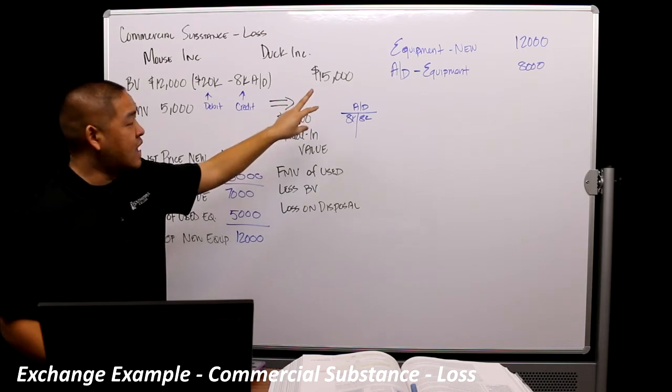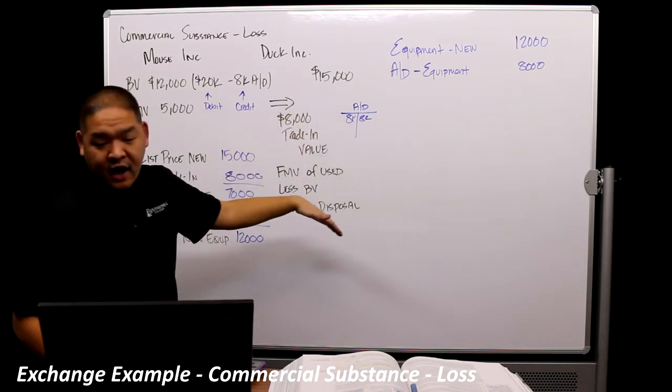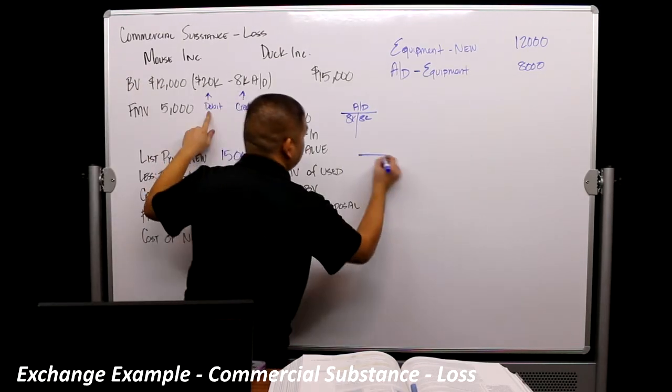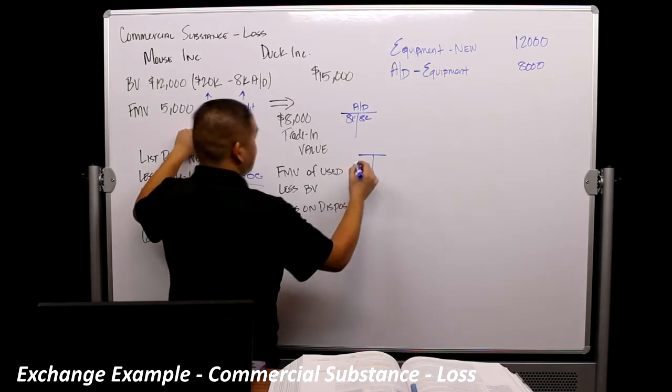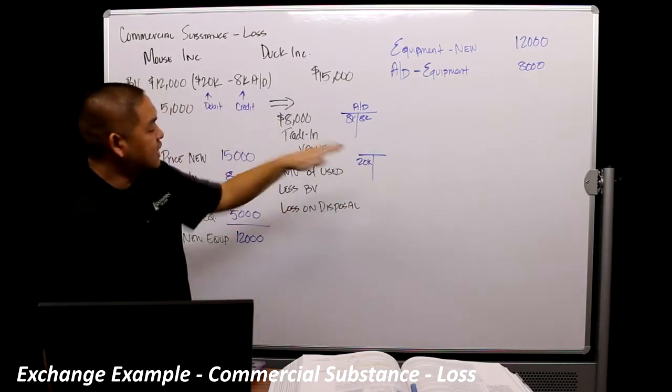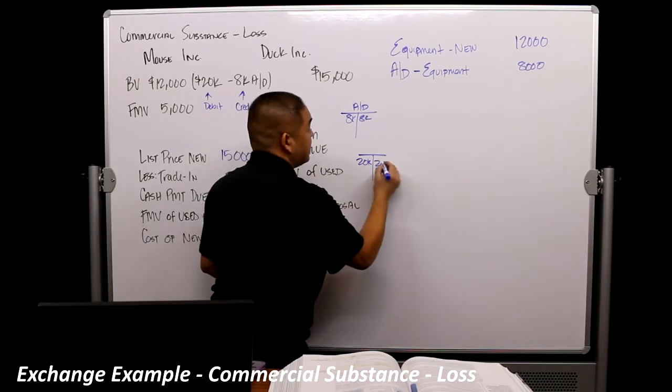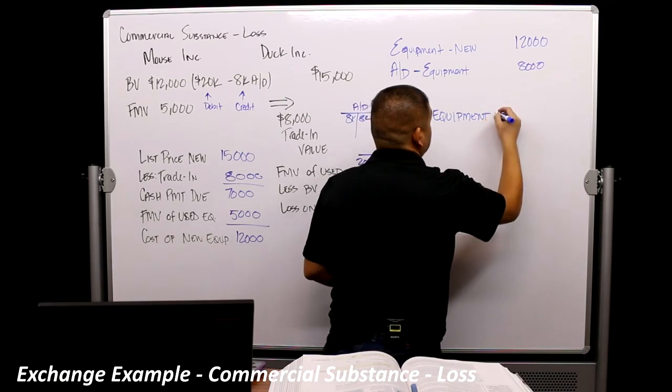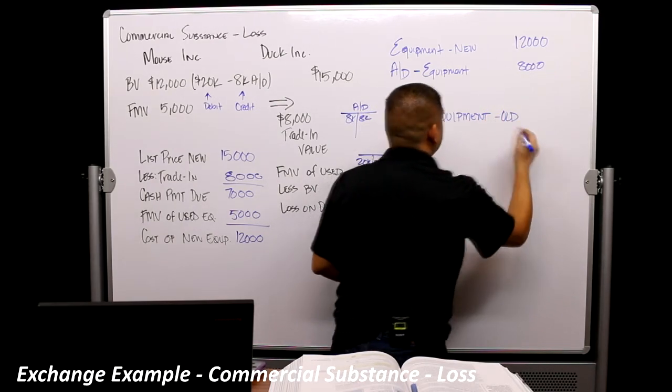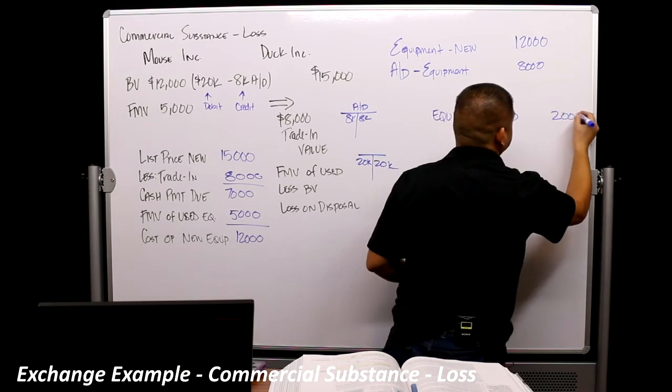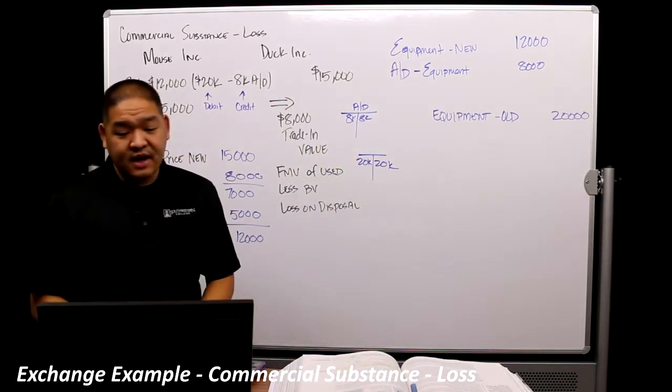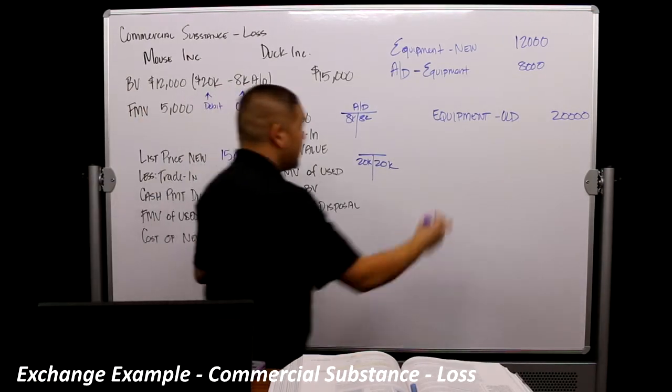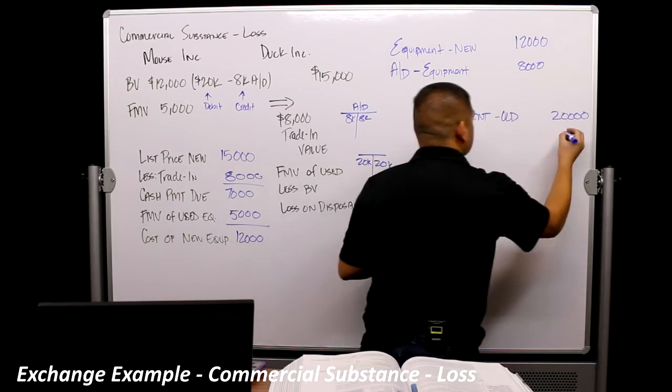All right, so that gives us those debits. We've got another debit that we're going to skip for now, but let's go to the credit. The credit, well, we need to get rid of this. So remember, equipment right now for this equipment is debit $20,000. So how do we get rid of it? We credit it $20,000 over here. So, equipment old, for $20,000. And then what else did we have to give up? Well, we had to give up $7,000 in cash. So we're going to credit cash for $7,000.